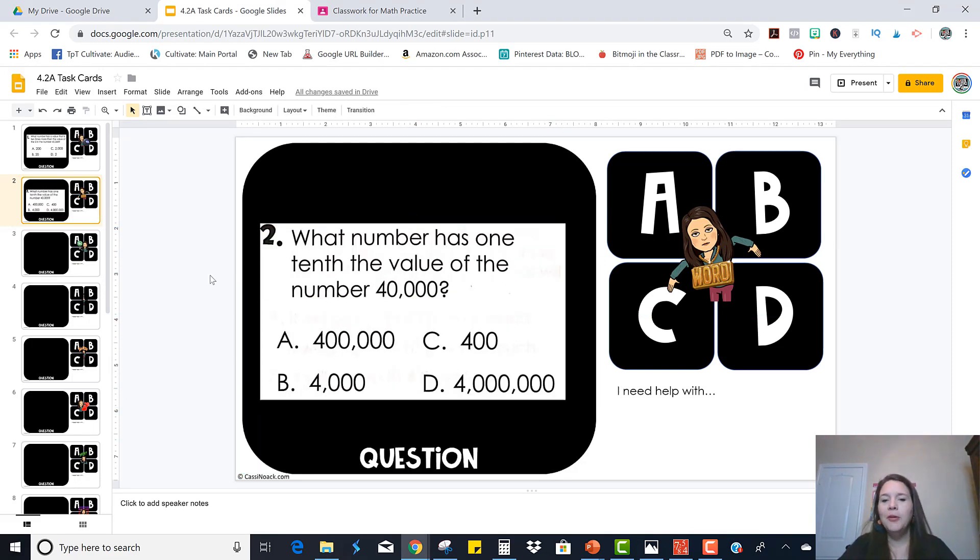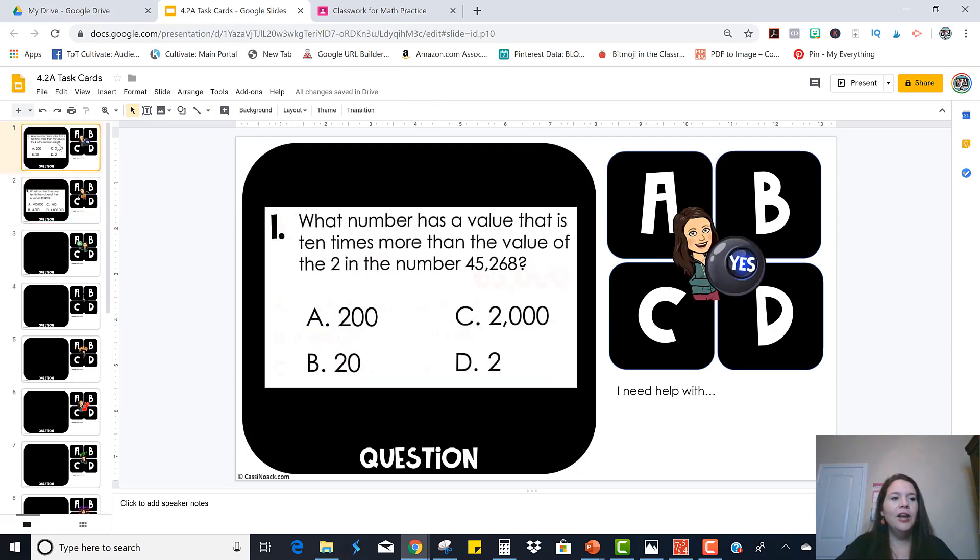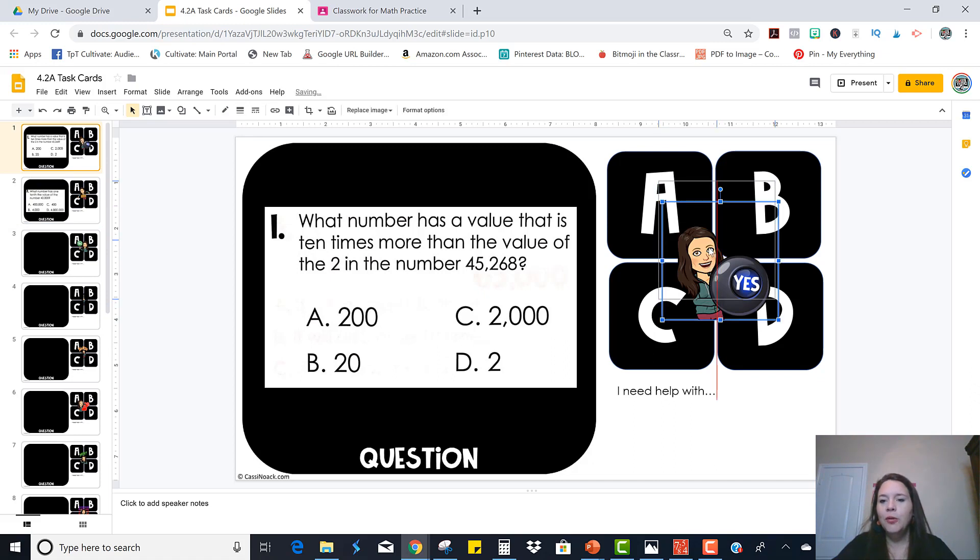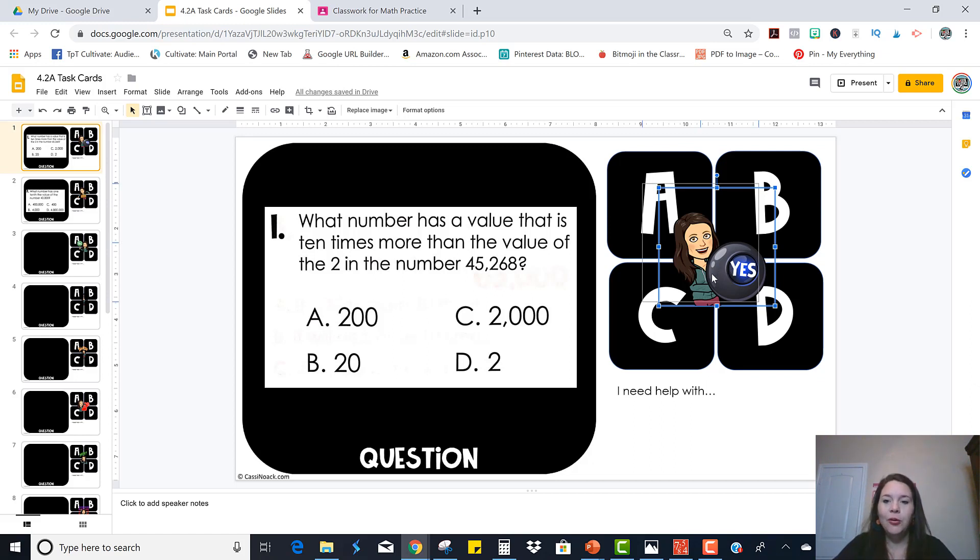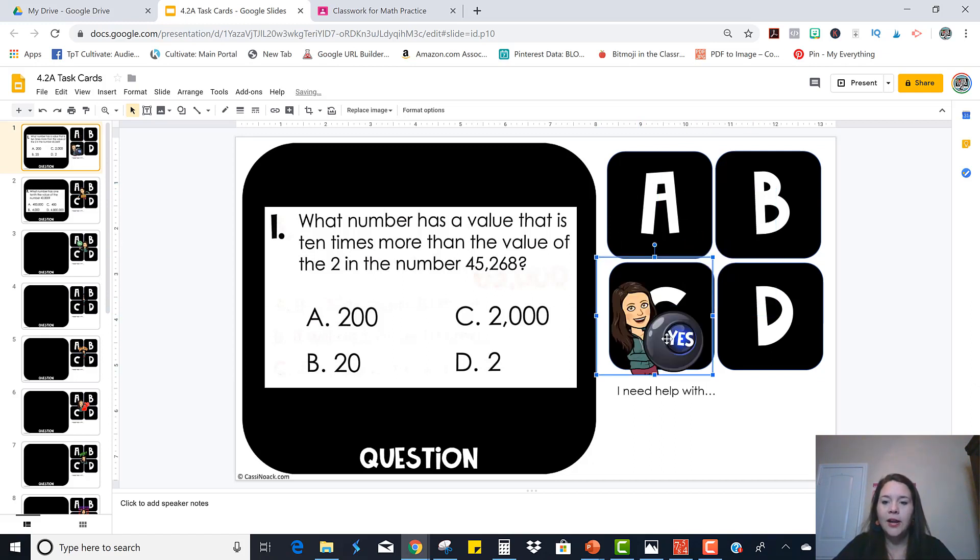Now what you're going to do is grab your answer key and then work on making this self-checking. You will need an image. This comes with my Bitmoji but you are welcome to change it for your Bitmoji or any other image that you like. If your students are into football then maybe you could do football logos. Once you have the image you're going to drag it over the correct answer and move it behind the correct answer. Make sure none of it is showing.